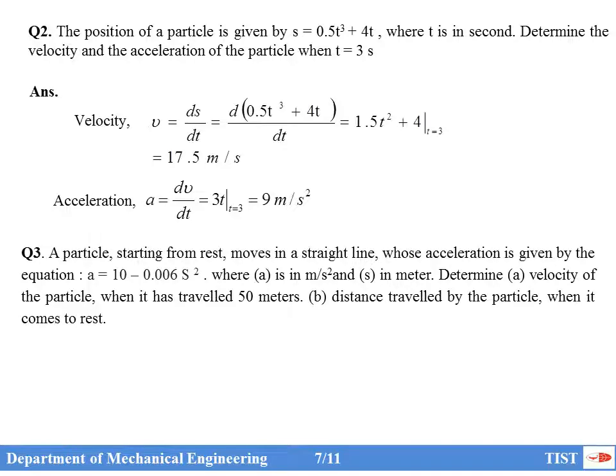We will now solve a problem where the expression for acceleration is given and we need to find velocity and distance. Question 3: A particle starting from rest moves in a straight line whose acceleration is given by a = 10 − 0.006S², where a is in m/s² and S is in meters. Determine the velocity when it has traveled 50 meters, and find the distance traveled when the particle comes to rest.